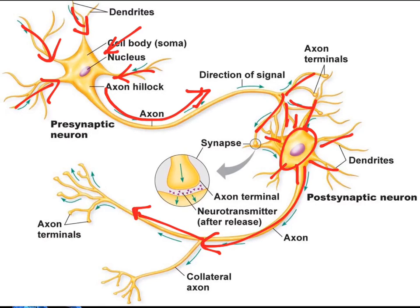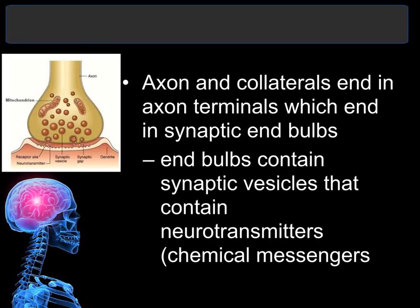Notice this neuron has two branches off the axon — that is why it is called the collateral axon. Recall from the last unit that the ends of the axon are little enlargements called the synaptic end bulb, and they contain synaptic vesicles, which inside contain the neurotransmitters. Depending on which type of neuron we are talking about, we will be dealing with different neurotransmitters.